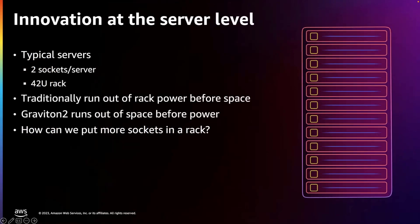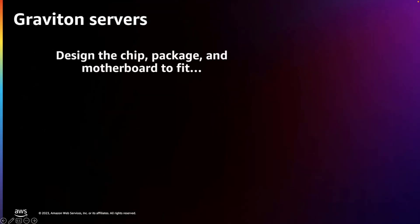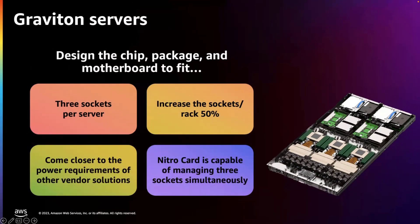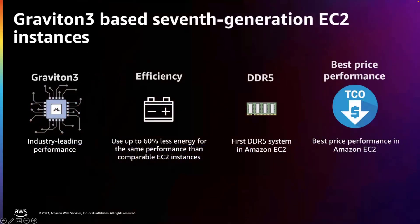What about at the server level? We also have end-to-end ownership of the physical servers. In the data center, racks have a certain amount of provisioned power. In traditional data centers, you typically run out of power well before you run out of space. But with Graviton 2, we actually run out of space before we run out of power. So with Graviton, we design the chip and package it together to fit the motherboard. We added an additional CPU socket — a three-socket design — which allows us to host 50% more of these efficient instances with less power for cooling, less space in the data center, ultimately leading to lower embodied carbon. To summarize, with Graviton 3-based instances, we deliver the best price performance and best performance per watt, enabled through investments in custom silicon and end-to-end optimizations from the chip level to the server and rack level in both hardware and software.